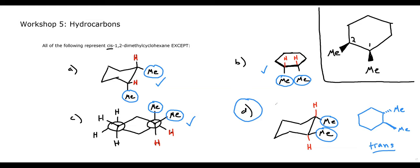So there's workshop number five on hydrocarbons. The most important topics are definitely the Newman projections and the cyclohexane chair conformations. If you're not fully grasping that, I highly recommend getting a model kit — being able to hold these structures in your hand and bend the bonds is very helpful. The next lecture will look at stereoisomerism and continue from there. See you in the next one.